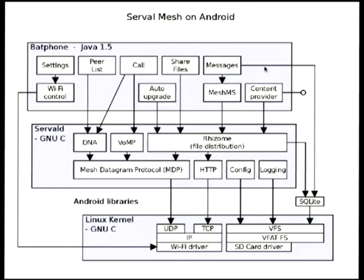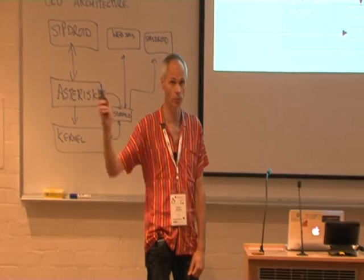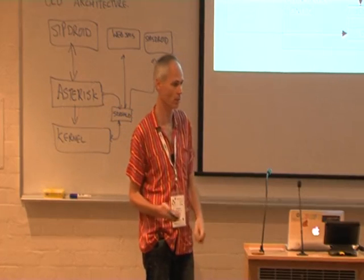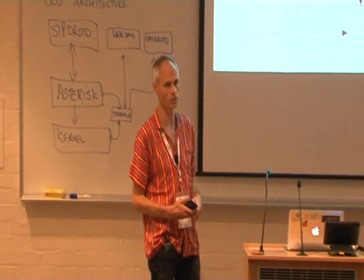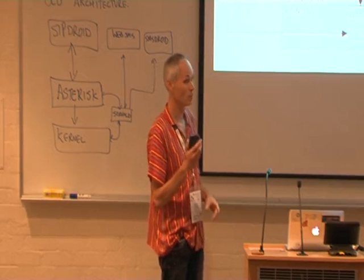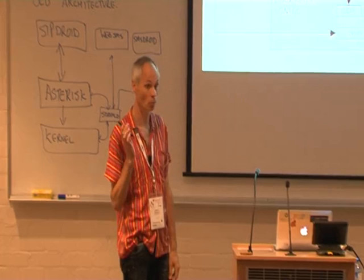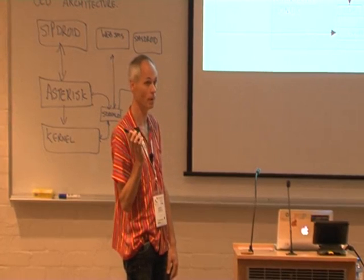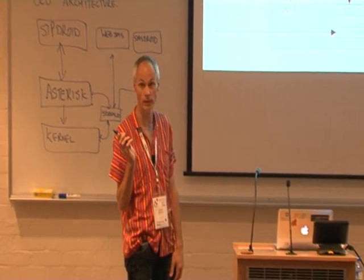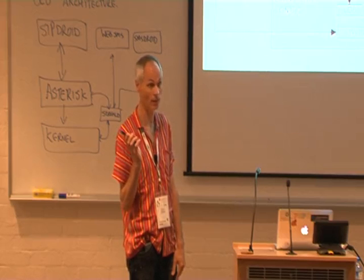DNA is a way to map a telephone number to a device. Because if you think about when you make a phone call on a mobile telephone, it contacts the cell tower, goes to a central registry who happens to know - well, if I'm calling my brother, your brother is in cell number 500 over in the middle of Sydney - so it knows to route the call there. There's a big central telephone directory that the telcos maintain. With Serval, there is none of that. There is no central telephone directory.